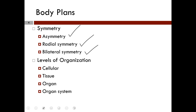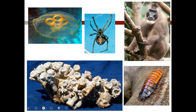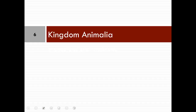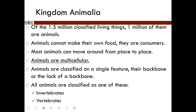The animal kingdom includes a large number of animals. Based on available evidence, animals and choanoflagellates shared a common choanoflagellate ancestor — choanoflagellates being that group of unicellular colonial protists. Many biologists assign sponges to a basal group known as the Parazoa. Of the approximately one and a half million classified living things, approximately one million are animals and approximately 300,000 are plants.